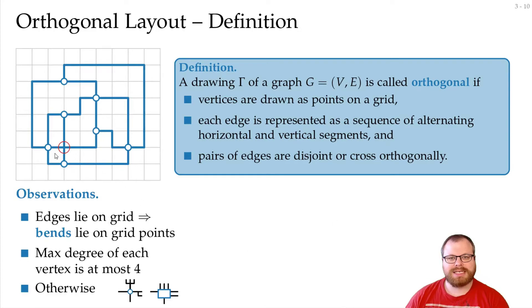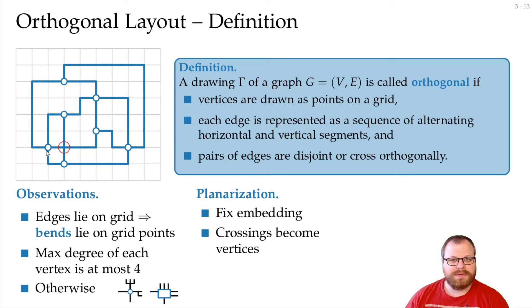In order to handle these crossings, what we usually do is that we first planarize the graph. That means we fix some embedding of the graph, and if that induces crossings like here, then we take each of these crossings and place a vertex on it. And then we get a planar embedding of some other graph, but if we remove these dummy vertices later, then we have a drawing of the input graph again. That makes things a bit easier, because then we don't have to distinguish between vertices and crossings, but we can handle everything the same way.